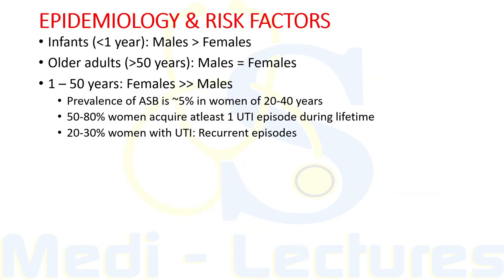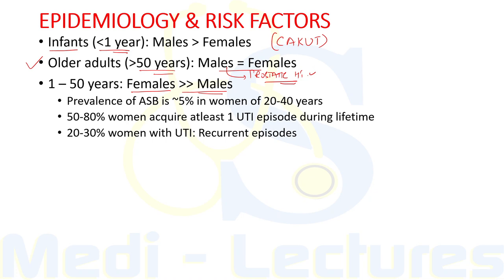Now let's discuss the epidemiology and risk factors. Considering age-wise epidemiology: in infants less than one year of age, UTI incidence is more common in males than females because male infants more commonly have congenital anomalies of the kidney and urinary tract. In the age group 1–50 years, the risk and incidence of UTI is far more common in females. In older adults aged more than 50 years, incidence is almost equal in both sexes because of prostatic hypertrophy.